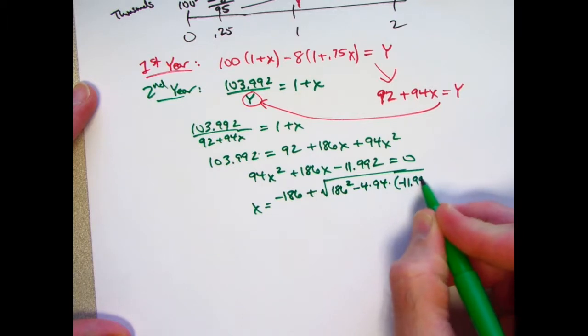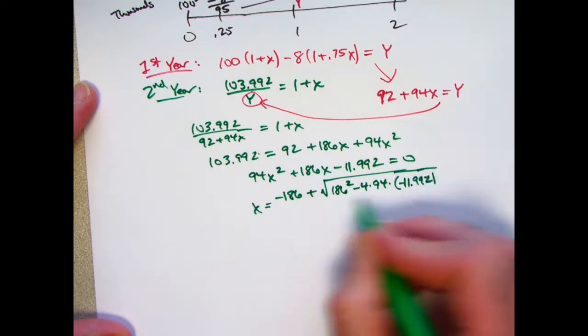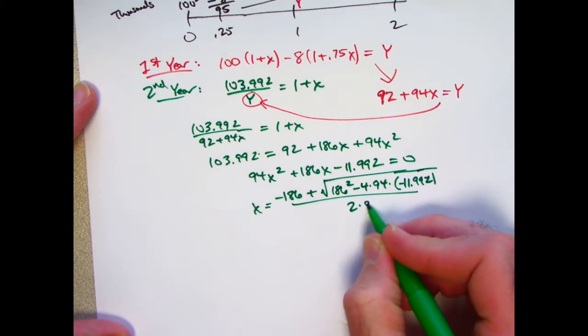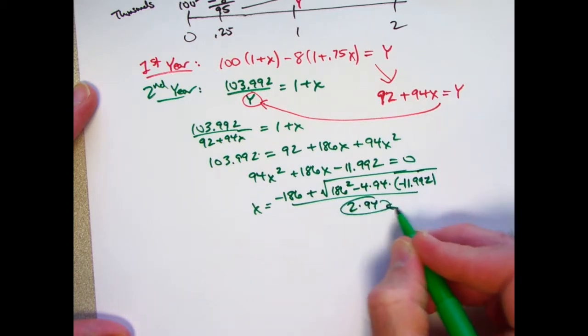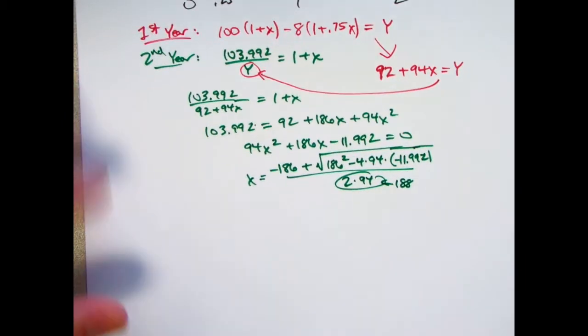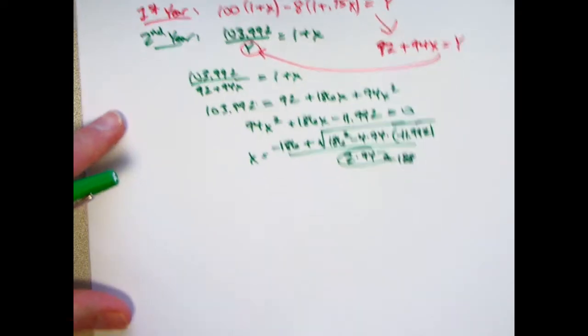All divided by 2 times 94. And that's, of course, 188. So now we'll start using our calculator here.